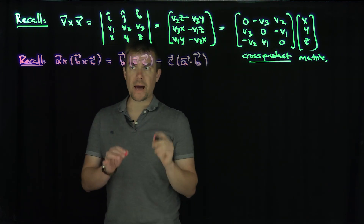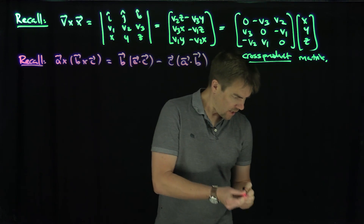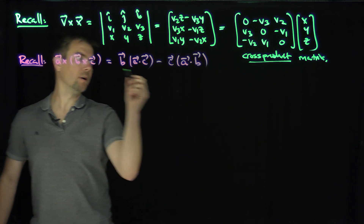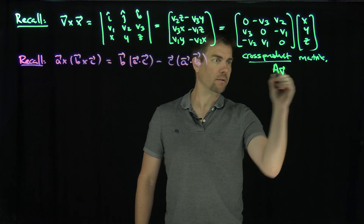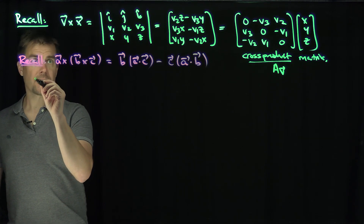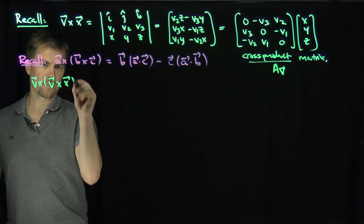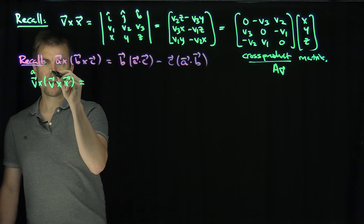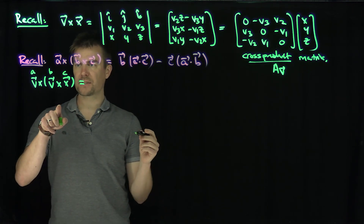I'm going to use this BAC-CAB identity to figure out a property of the square of this matrix. So now if we look at the square of this matrix, let's call this cross product matrix A sub v. Note that v cross (v cross x) — let's use the BAC-CAB identity to figure out what it is. That's my a, that's my b, and that's my c, so let's apply BAC-CAB carefully.